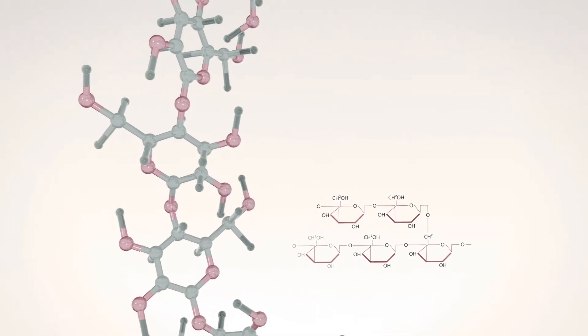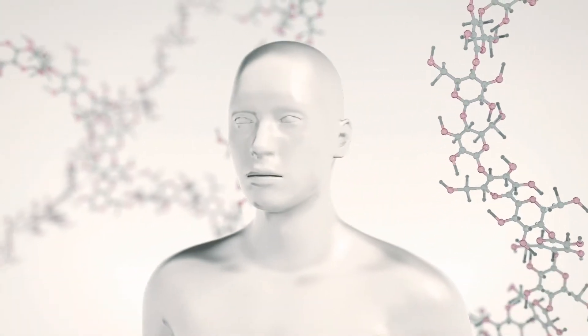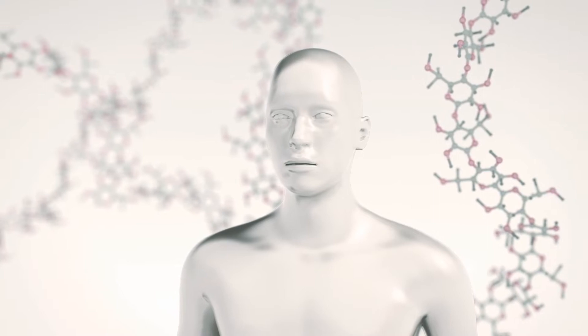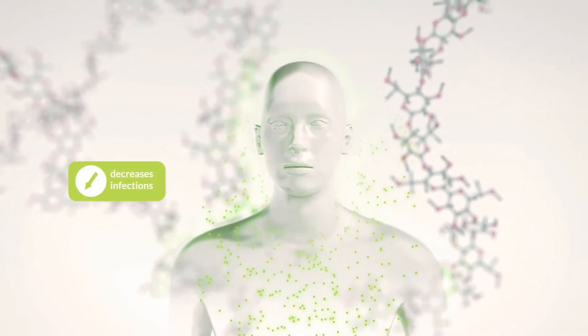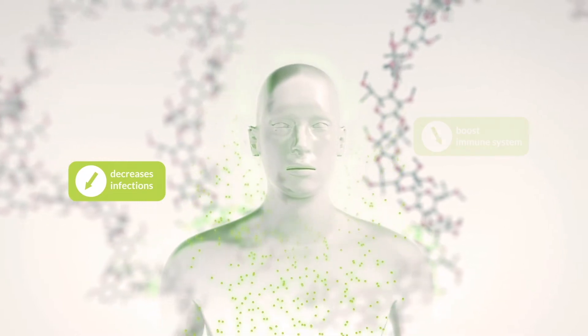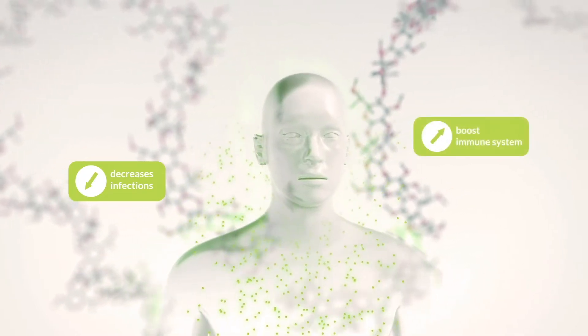Beta-glucan is scientifically known to support and boost the human immune system. It decreases the risk of viral or bacterial infection while at the same time increasing the body's ability to overcome diseases quickly.